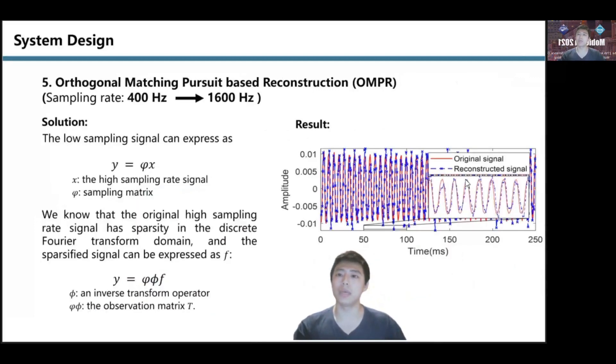Because we use a high precision accelerometer and sample the original vibration signal, we can use the OMP algorithm to reconstruct our signal. This method can effectively reduce sampling time and improve recovery accuracy. We eventually got back to 1600 Hz.